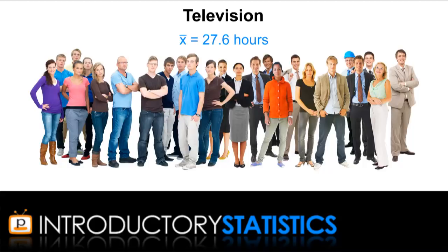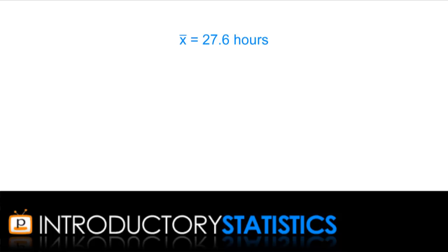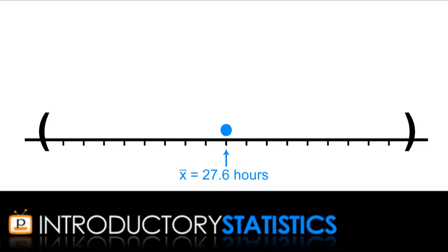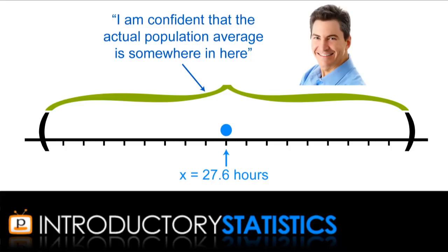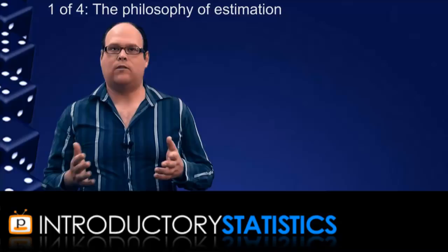Now, when the sociologist tries to infer something about the larger population, what they can do is use this sample mean of 27.6 to estimate the true population mean. The true population mean is probably not 27.6 exactly, and the estimate will involve coming up with an interval of values centered on 27.6, and the sociologist will claim that they are somewhat confident that the actual average number of hours is somewhere in that interval. That's why we call it a confidence interval.